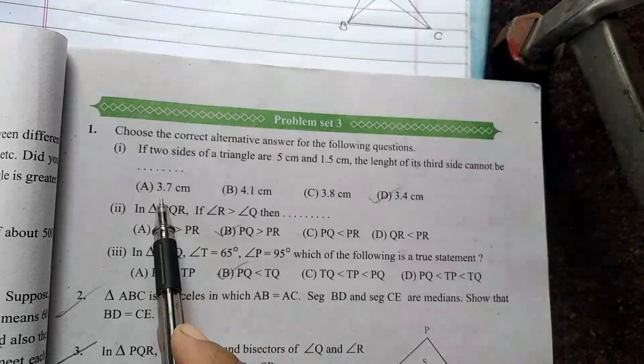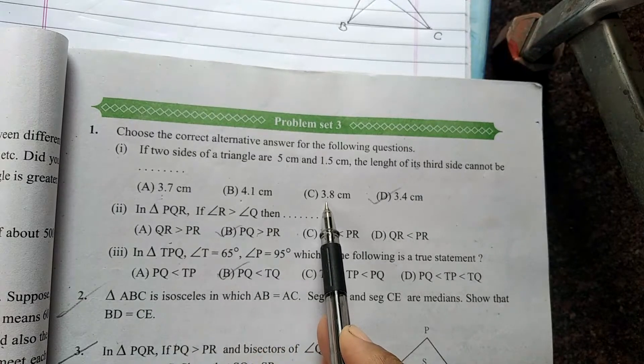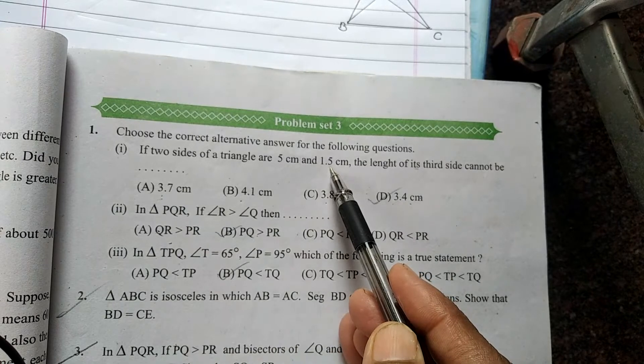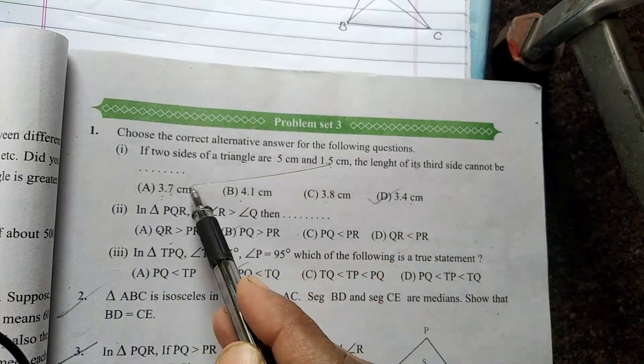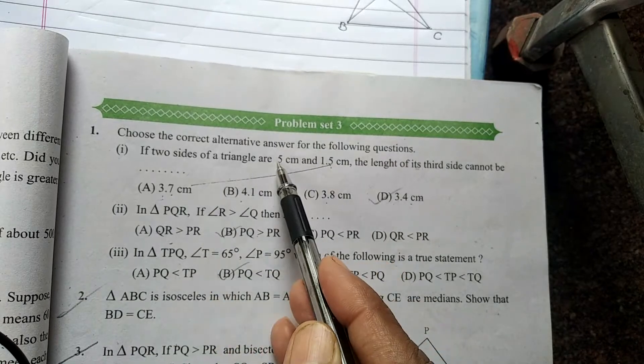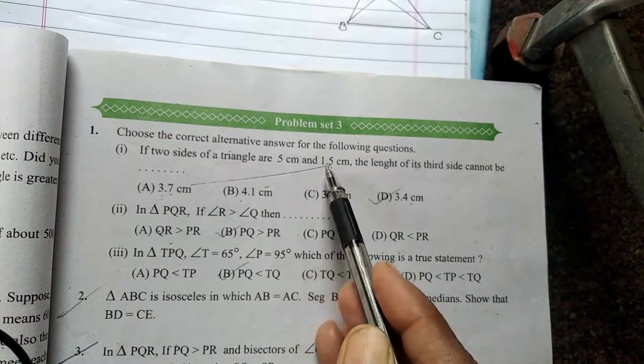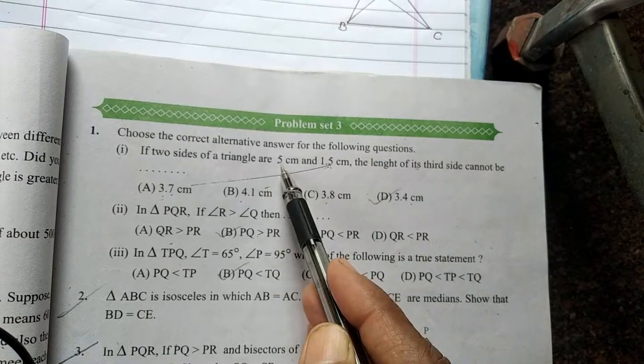What are our options? A: 3.7, B: 4.1, C: 3.8, and D: 3.4. We will add the sum of two sides. So, 1.5 plus 3.7 equals more than 5. Then 1.5 plus 4.1 equals 5.6, which is also greater than 5. And 1.5 plus 3.8, the sum is also greater than 5.